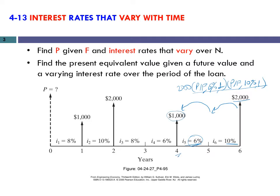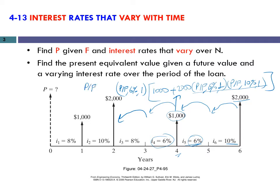Now I add the 1000 at year four to this value — that sum is the total value at time four. Then I need to shift it one period backward at 6% interest rate, multiplying by P/F at 6% and 1. Then again shift it one period backward at 8%, multiplying by P/F at 8% and 1. This value is now at the end of year two, and we have an additional 2000 there, so I add that 2000.